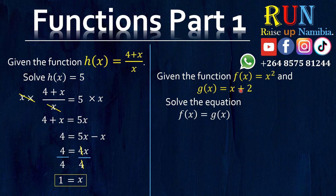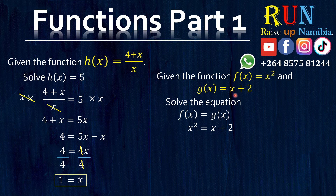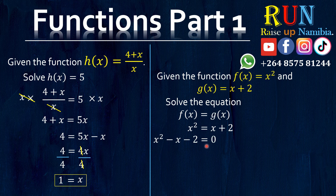How about for this one? Here you are given two functions and you are asked to solve this equation. It's actually also very simple. You substitute: F of X equals X squared, and G of X equals X plus 2. So you write down X squared equals X plus 2. Notice we want to solve for X but we have an X squared here. Because F of X equals G of X, we can take all terms to one side and make them equal to 0. We had X squared; bring the positive X to the left — it becomes negative X. And bring the positive 2 to the left — it also becomes negative 2. Now notice that here we have a quadratic trinomial.